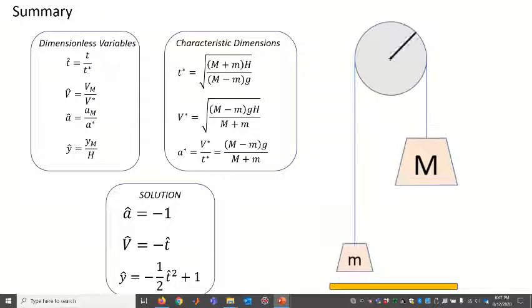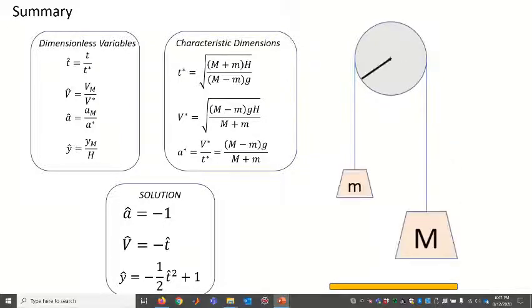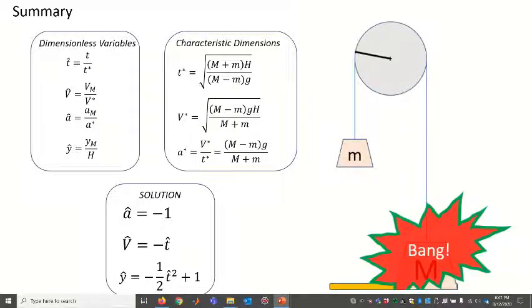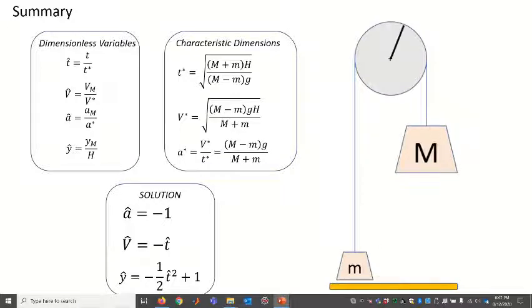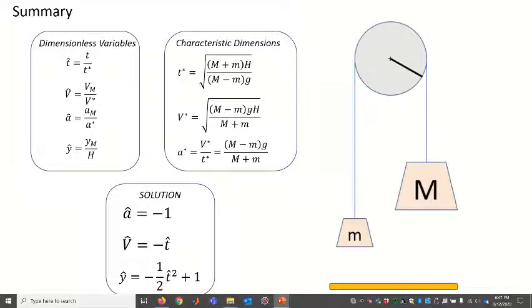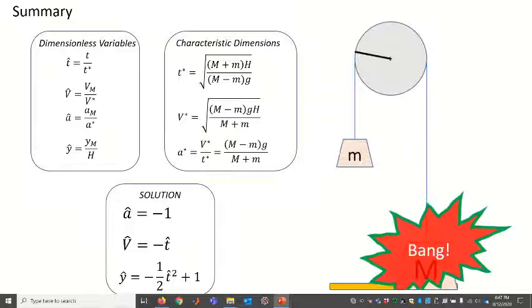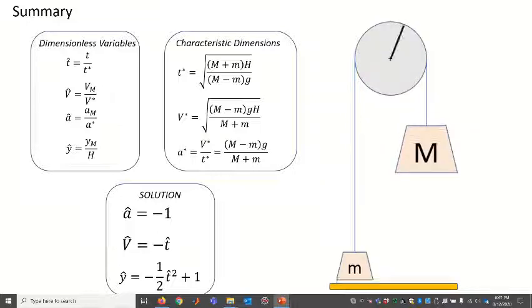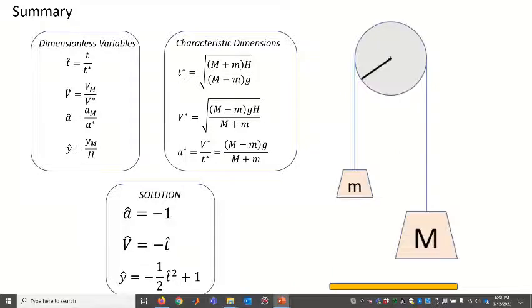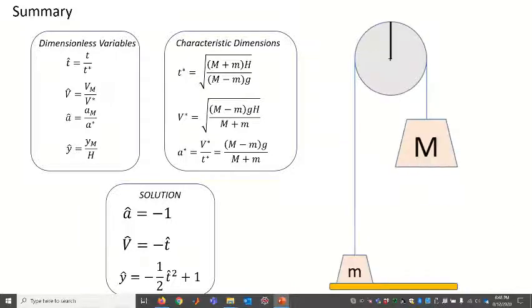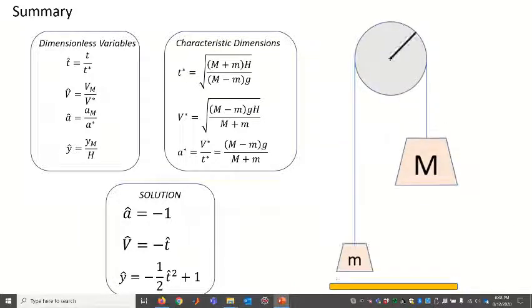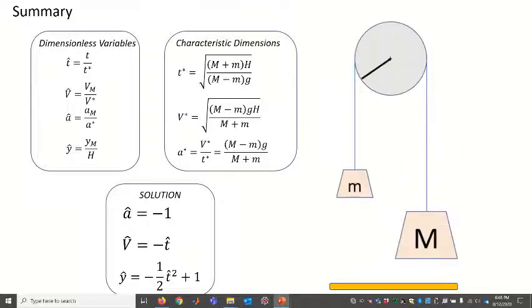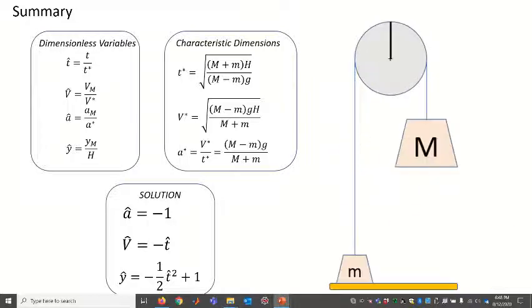On the top left from the analysis there are certain dimensionless variables. Time is non-dimensionalized with a characteristic dimension and that square root term comes from the analysis. The velocity of the large mass M has a characteristic dimension that's given and shown.